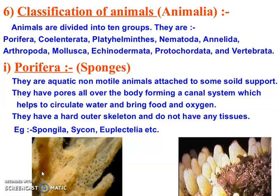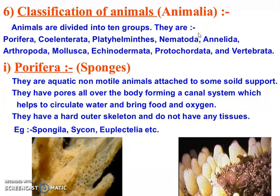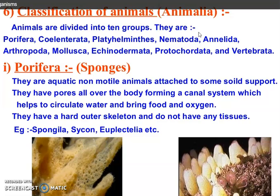Vertebrates are those organisms which have a vertebral column, or you can say backbone is present. But in invertebrates, backbone is absent and they do not have any internal skeleton. So we are going to classify all the animals into two groups, i.e. vertebrates and invertebrates. In this slide, we are going to discuss about invertebrates, i.e. animals without vertebral column.